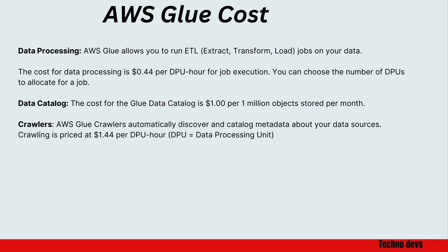You can choose the number of DPUs to allocate for a job. Data catalog: the cost for the Glue data catalog is $1 per 1 million objects stored per month. Crawlers: AWS Glue crawlers automatically discover and catalog metadata about your data sources. Crawling is priced at $1.44 per DPU. DPU stands for Data Processing Unit.